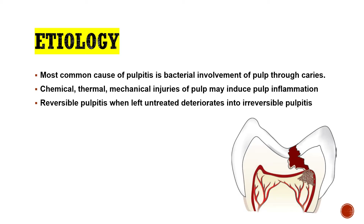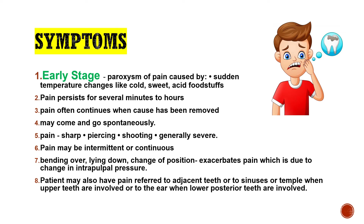The etiology of irreversible pulpitis: the most common cause is bacterial involvement, that is caries. The second cause can be mechanical injury or chemical/thermal injury to the pulp. The third is when reversible pulpitis is left untreated — for example, early occlusal caries that is not treated progresses to moderate caries and then deteriorates into irreversible pulpitis.